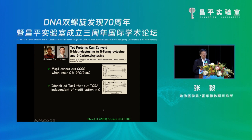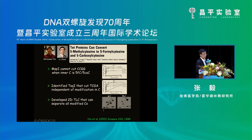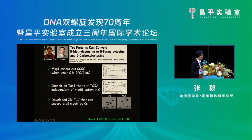We then looked for a restriction enzyme that doesn't care about the inner cytosine modification. We found TAC1, which recognizes TCGA and does not care about modification status — it can cut regardless. Using this, we could check whether TET protein can generate formylcytosine and carboxylcytosine. Using 2D thin-layer chromatography, we identified two extra spots, X and Y, and showed they correspond to formylcytosine and carboxylcytosine.